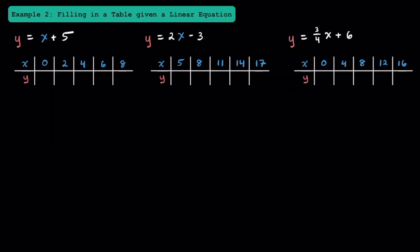Here in example 2, let's practice filling in a table when we're given a linear equation. Let's look at this first linear equation, where we have y is equal to x plus 5. y, which is our dependent variable, depends on the right side, which includes our independent variable x. Let's start by using the x value of 0 and substituting it into our equation to find y. Substituting in 0 for x, we get y is equal to 0 plus 5, and that's just going to equal 5.